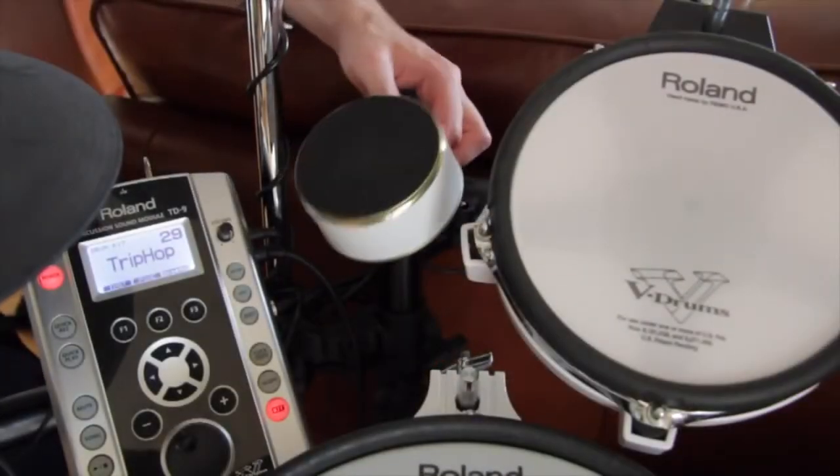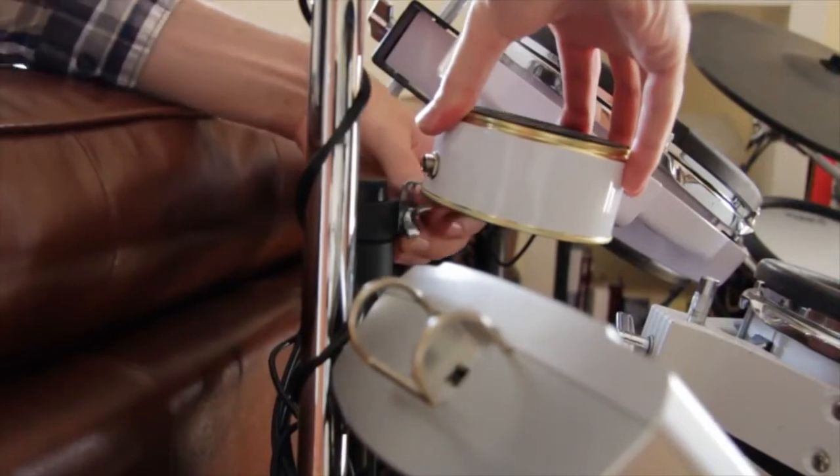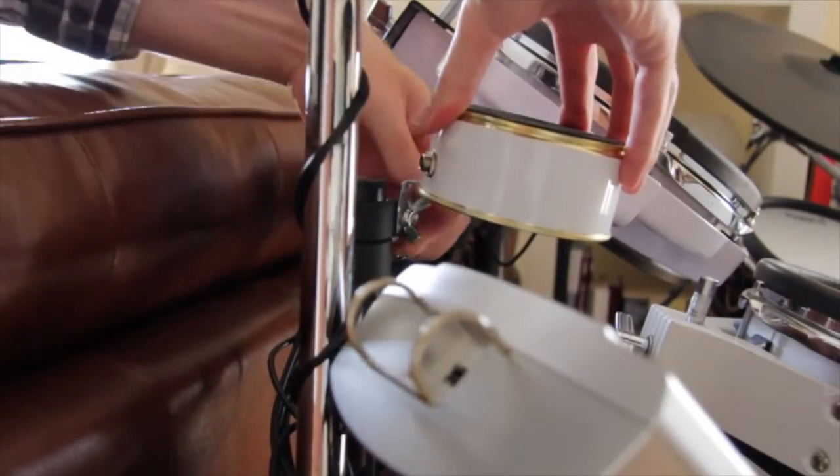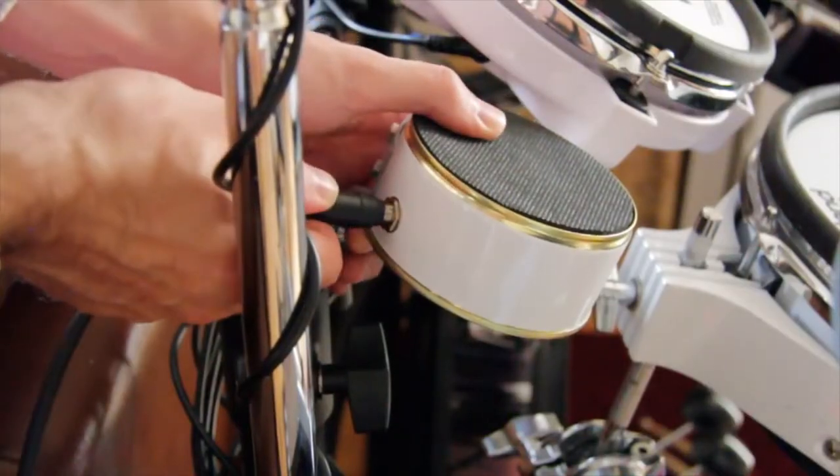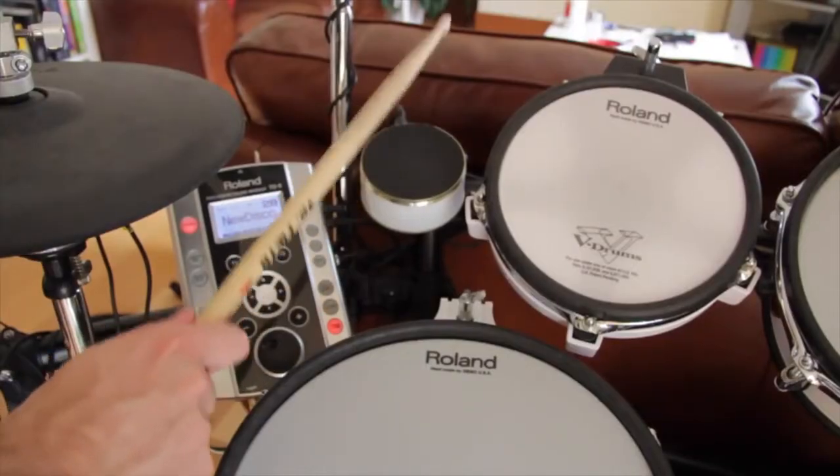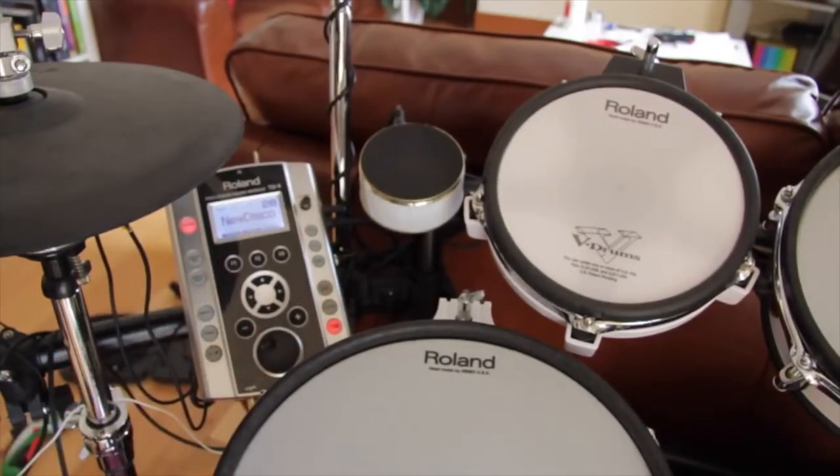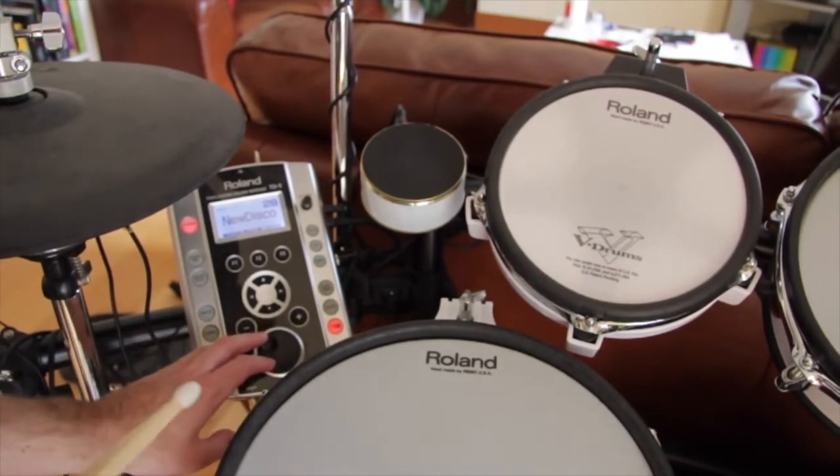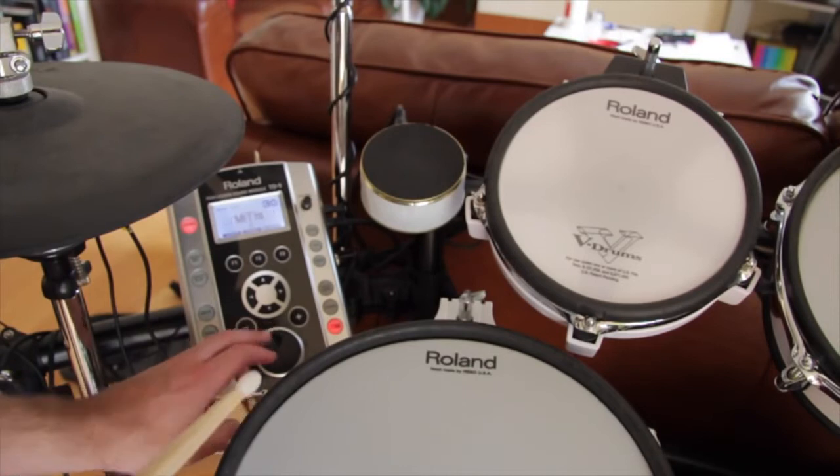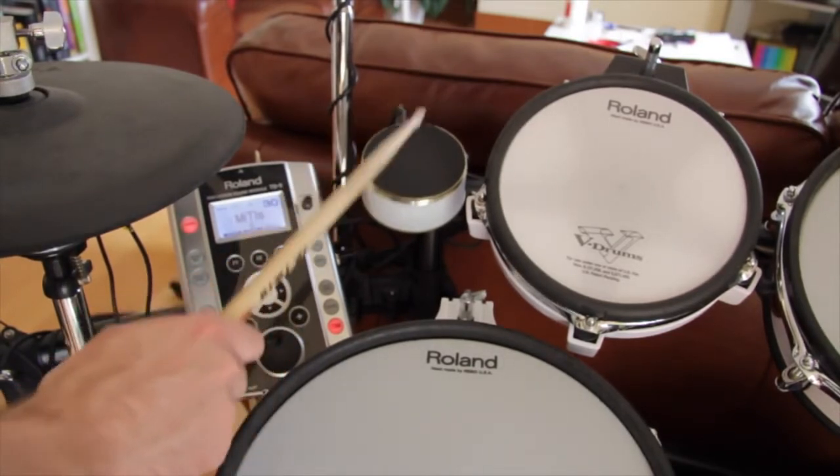Mount it to the rack and fix the wing nut. Connect the cable and test the pad. If the pad accidentally gets triggered, change the threshold setting in the module. We want to trigger a cowbell sound and use it as percussion pad.